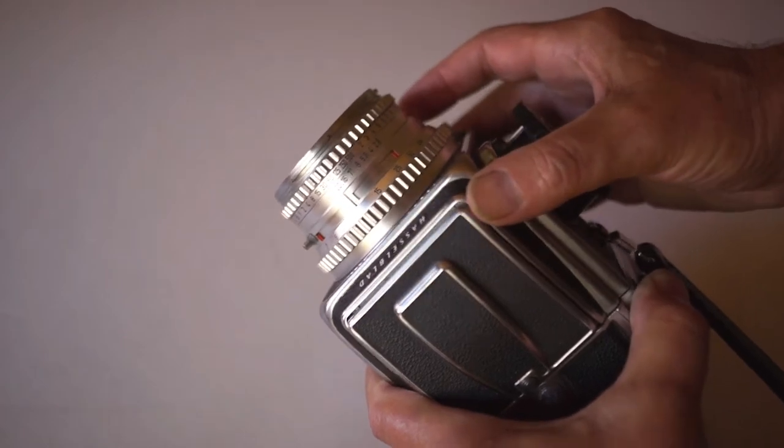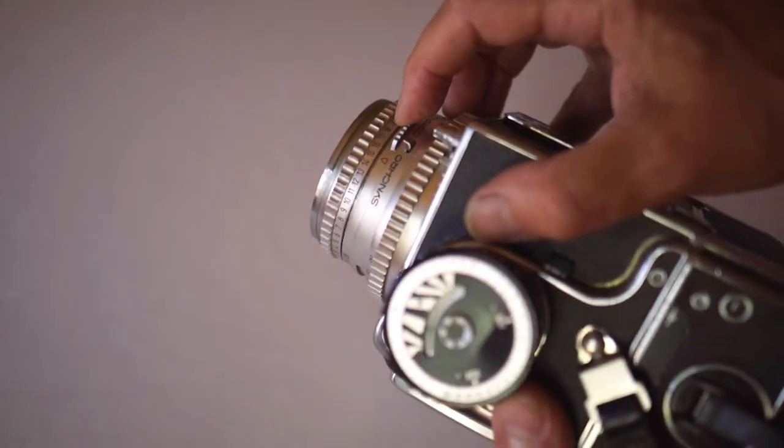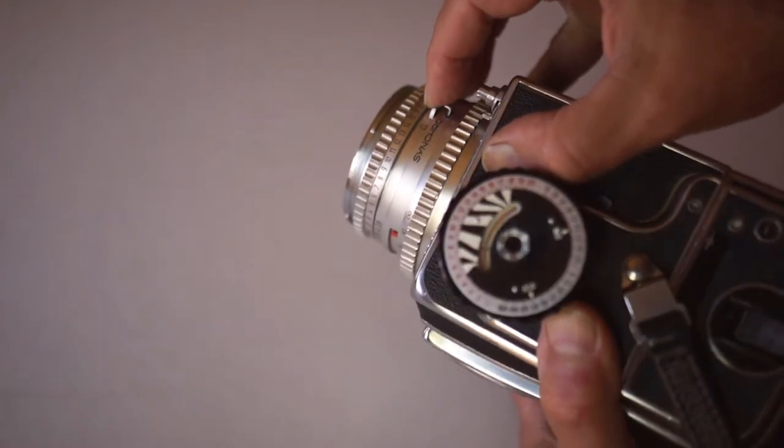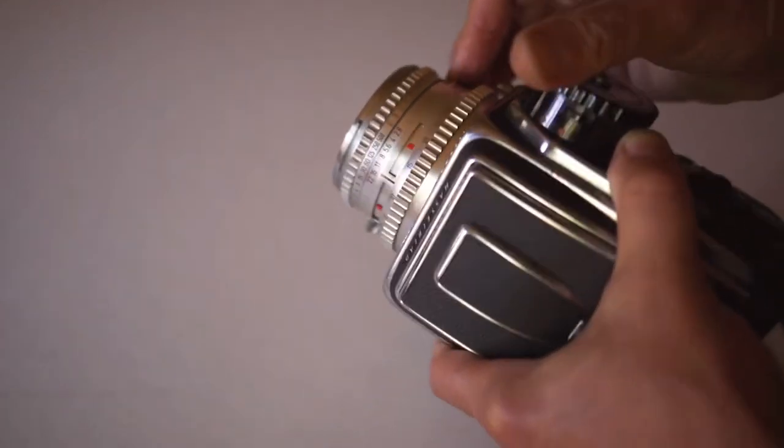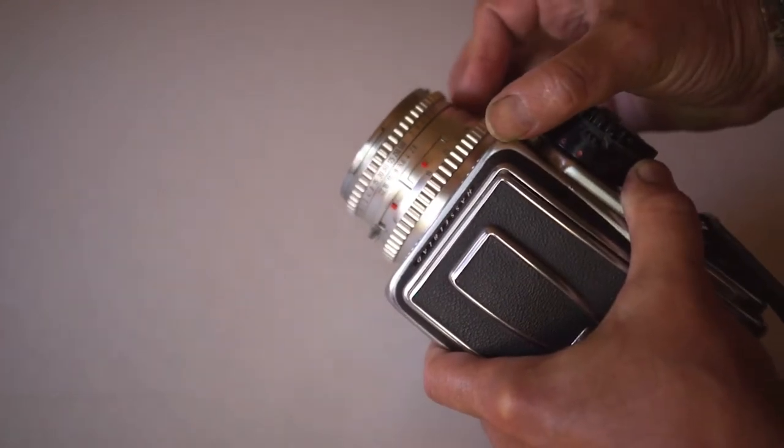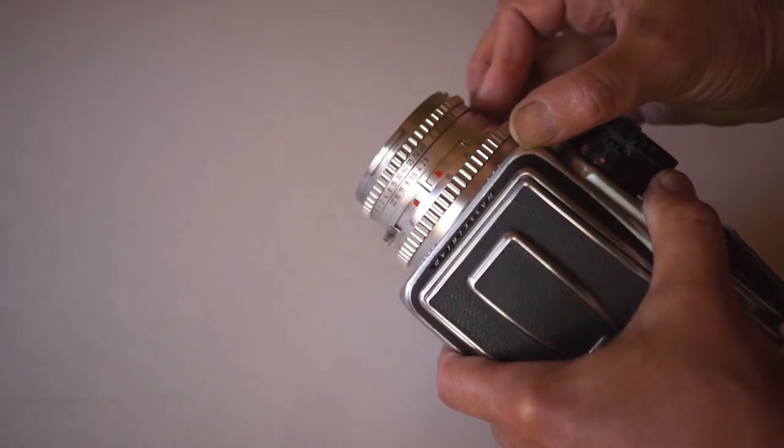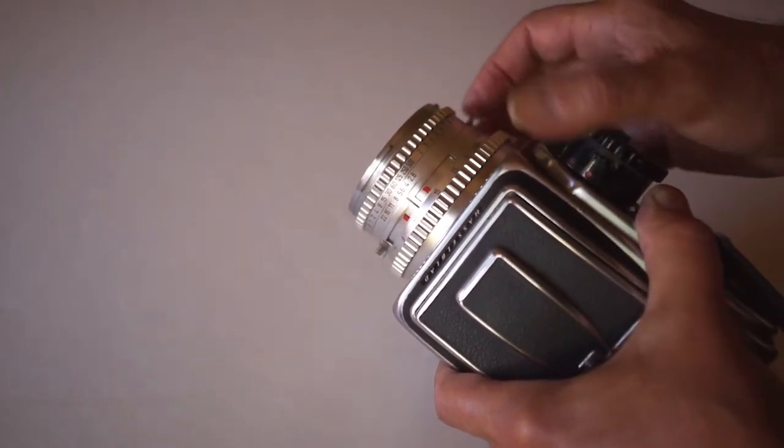If I want f/5.6 at the sixtieth, I have to push down this ring right here. And then, this will move independently. I can move this to 5.6. That's a little tricky.